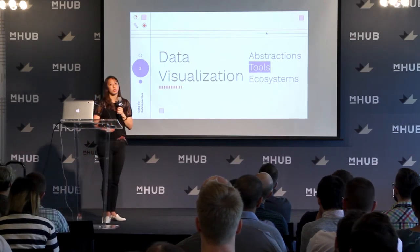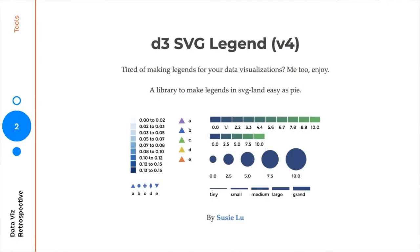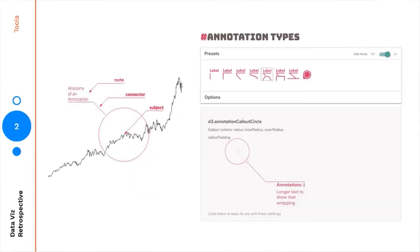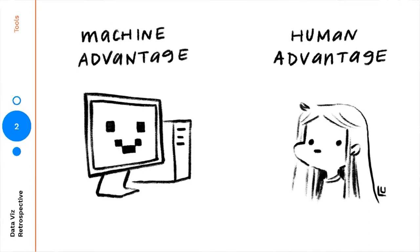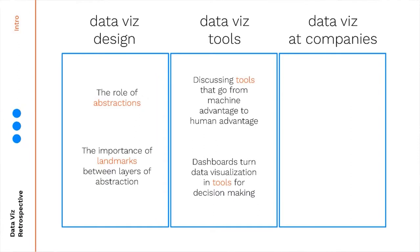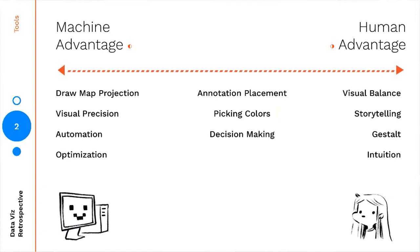The next topic is data visualization tools. This package that I worked on helps you automatically generate a legend based on scales you've already used in your visualization process; this other one helps create annotations in D3. I think of these tools on a spectrum from human advantage to machine advantage — we're trying to push as much as we can to the machine advantage while still optimizing for a person to interact with the system. For example, drawing a map projection is extremely precise and great to push to a computer, whereas storytelling, gestalt principles, and working with intuition are all human advantages.